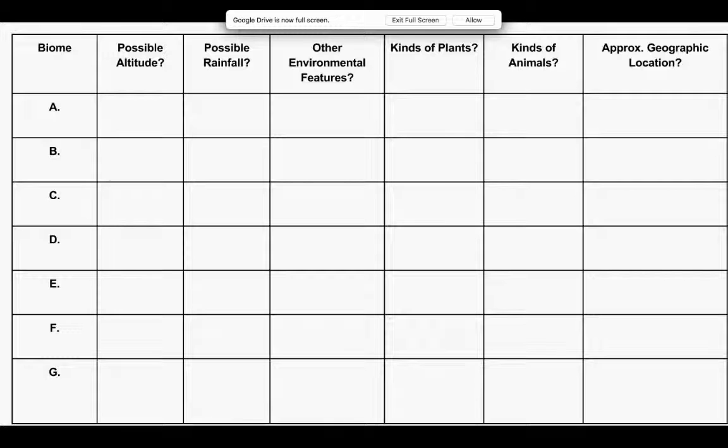Here, what I went ahead and did was in the beginning of the lesson, I had the students put this chart in their lab books. They all have lab books, and I had them build this chart and explain how they did it. I wanted them to put some of these characteristics, possible altitudes, things like that, in here.